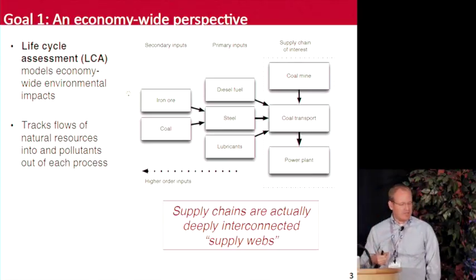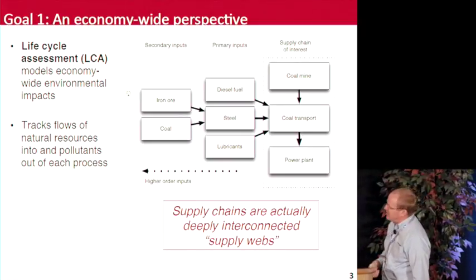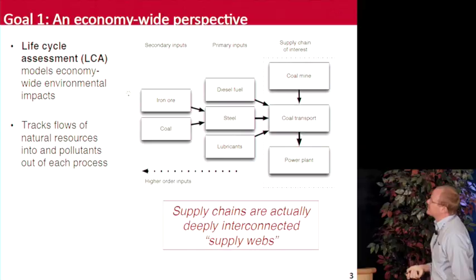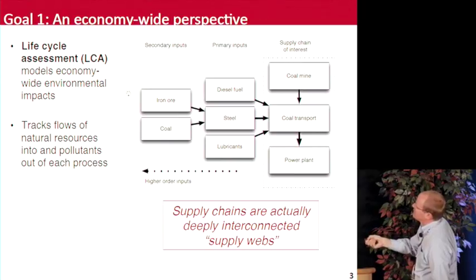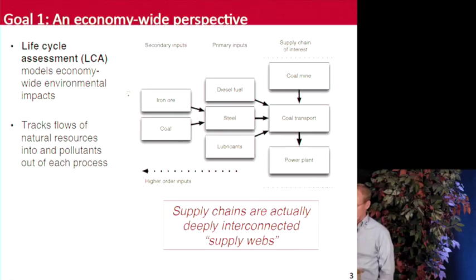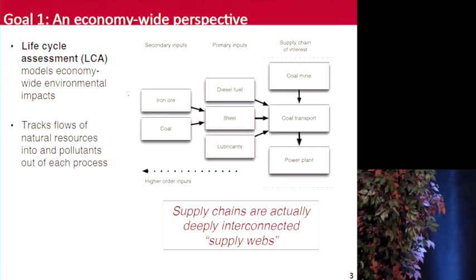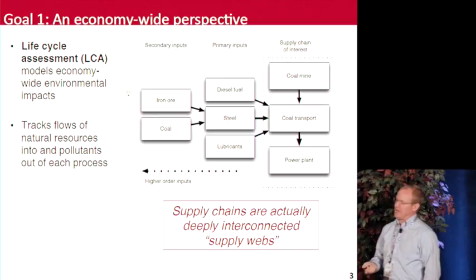For goal one — achieving an economy-wide perspective — the methodology we're using is called life cycle assessment. LCA is a technique developed over several decades to model economy-wide environmental impacts from a technology by tracking flows of natural resources and pollutants between the economy and the ecosystem. For example, a coal mine feeds into coal transport via rail, then to a power plant. That supply chain spiders out: diesel fuel, steel, and lubricants are consumed in coal transport; making steel requires iron ore and coal. These chains are actually supply webs that feed back on themselves mathematically.